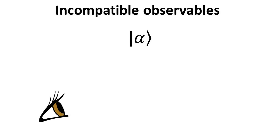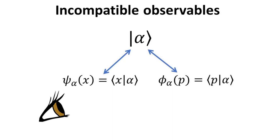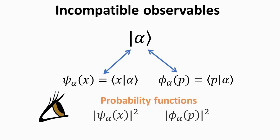The uncertainty principle lies at the heart of quantum physics, and it deals with how the measurement of one observable interferes with the measurement of another observable. Consider an unknown quantum state denoted as alpha ket. The unknown state alpha ket can be expressed either in position or momentum representation, which are the wave functions psi of x and phi of p. These two wave functions are related via the Fourier transformation, and their modulus square gives us the probability function — the probability of finding the particle at position x or momentum p respectively.